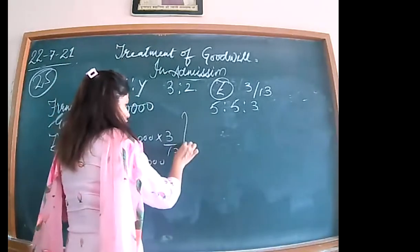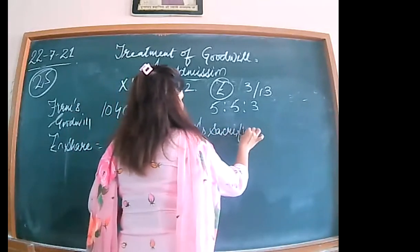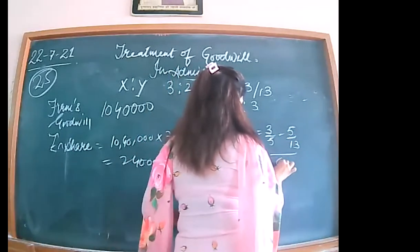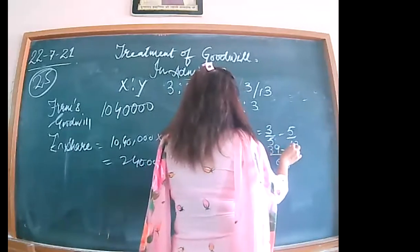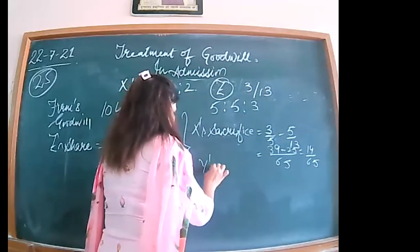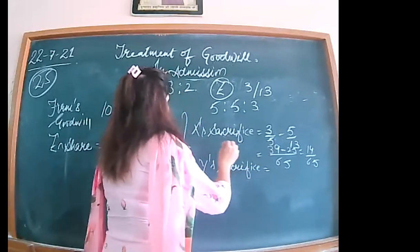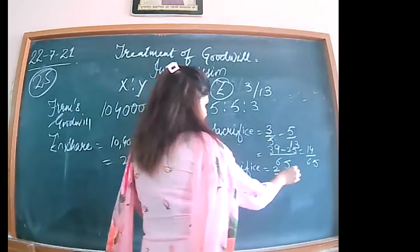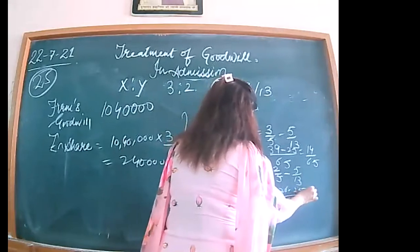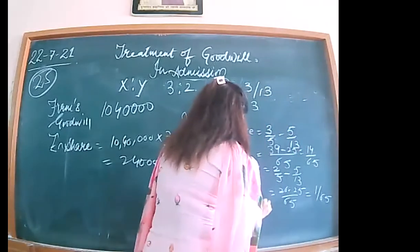X's sacrifice = old minus new = 3/5 minus 5/13. LCM is 65: 39/65 minus 25/65 = 14/65. Y's sacrifice = 2/5 minus 5/13. LCM is 65: 26/65 minus 25/65 = 1/65. So the sacrificing ratio is 14 is to 1.